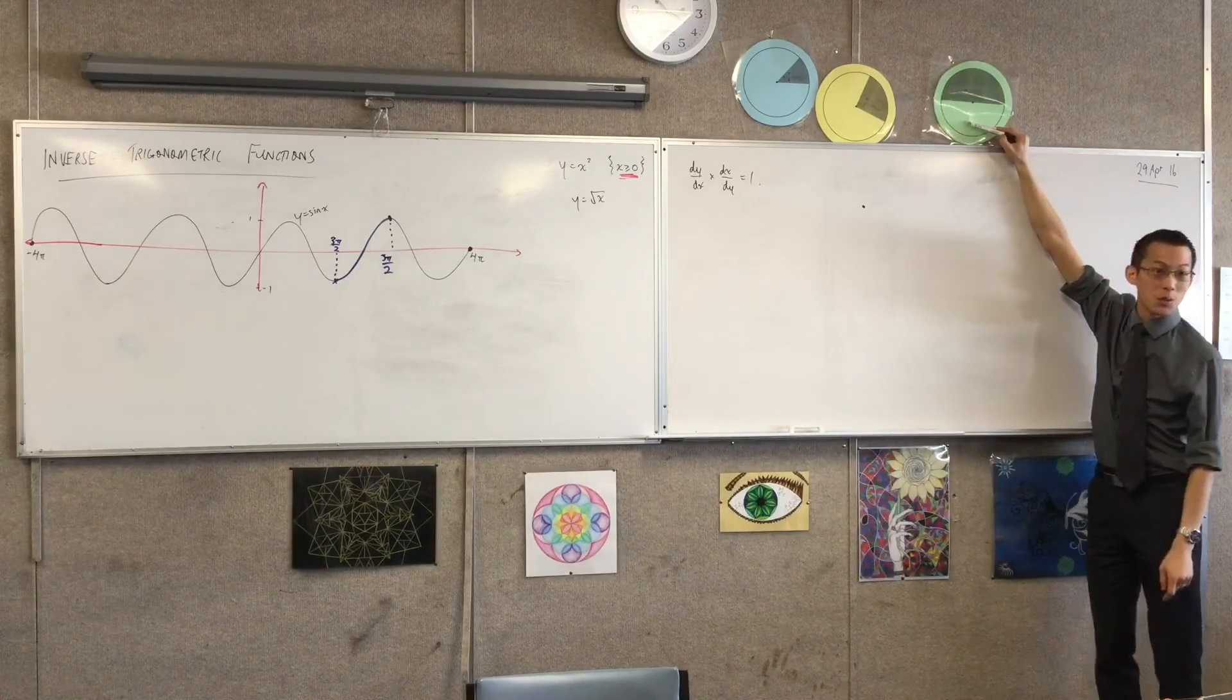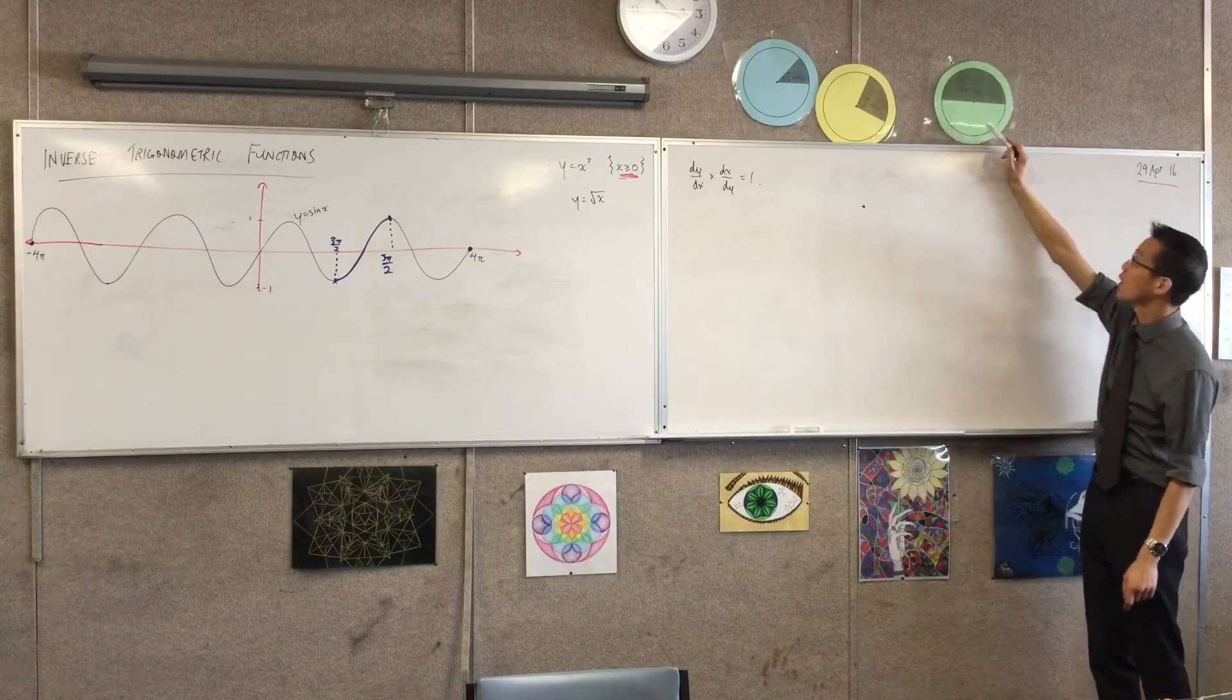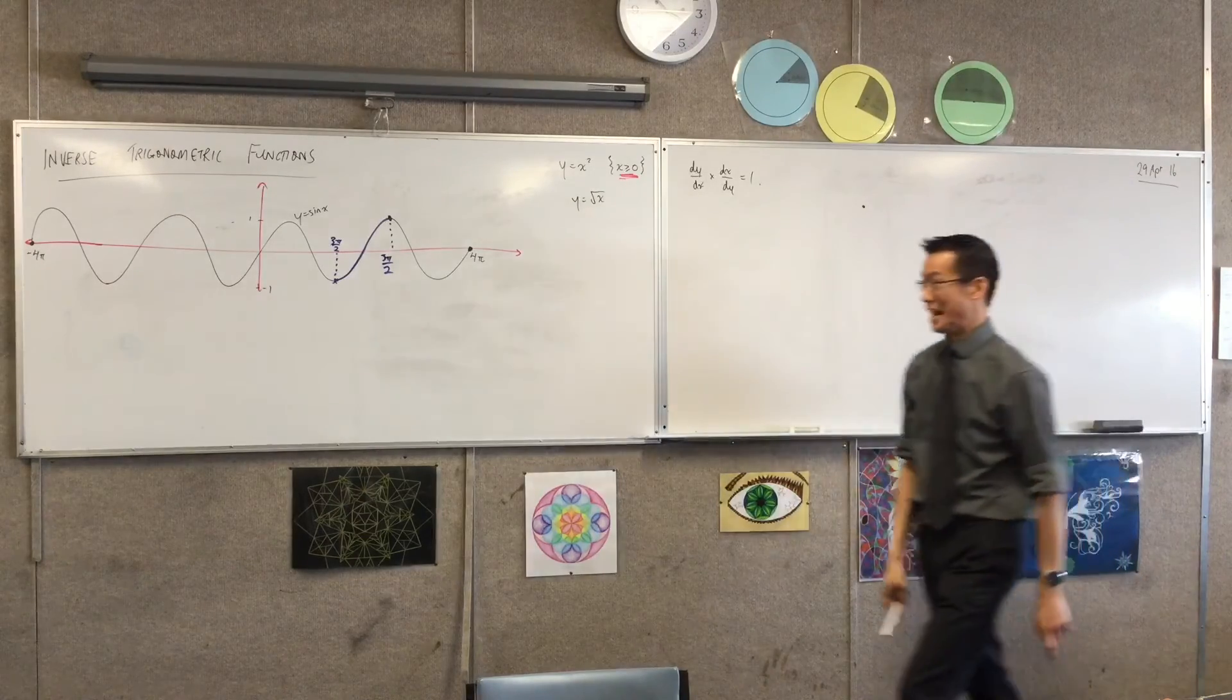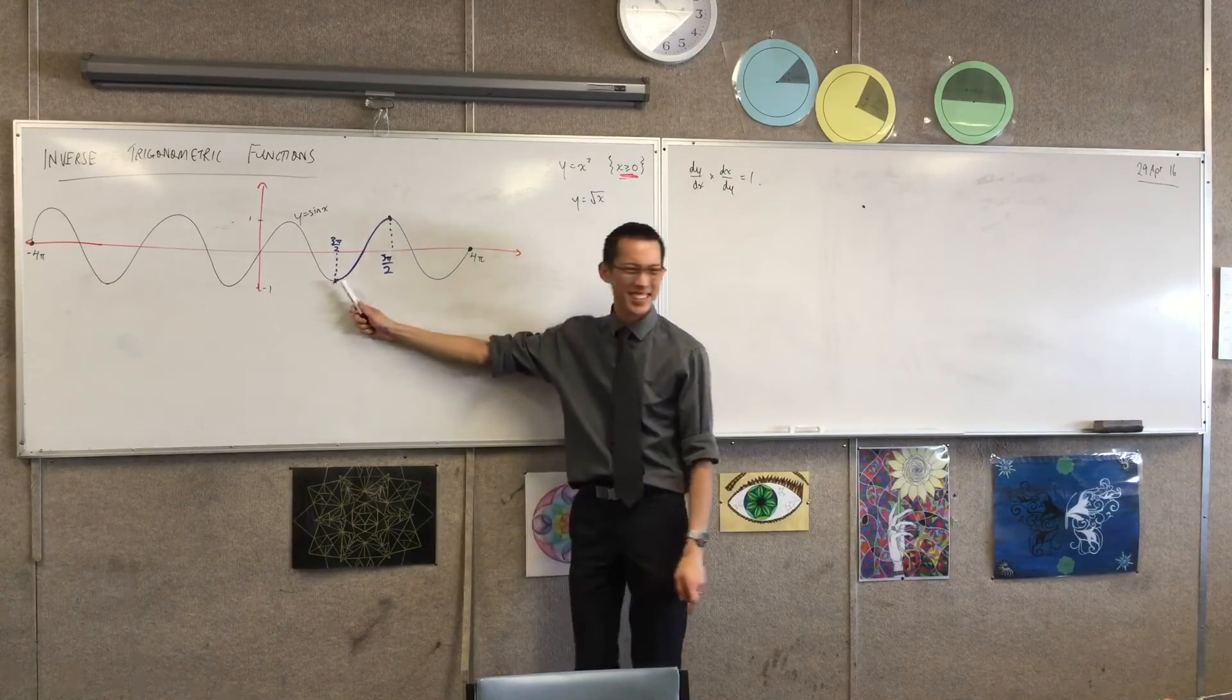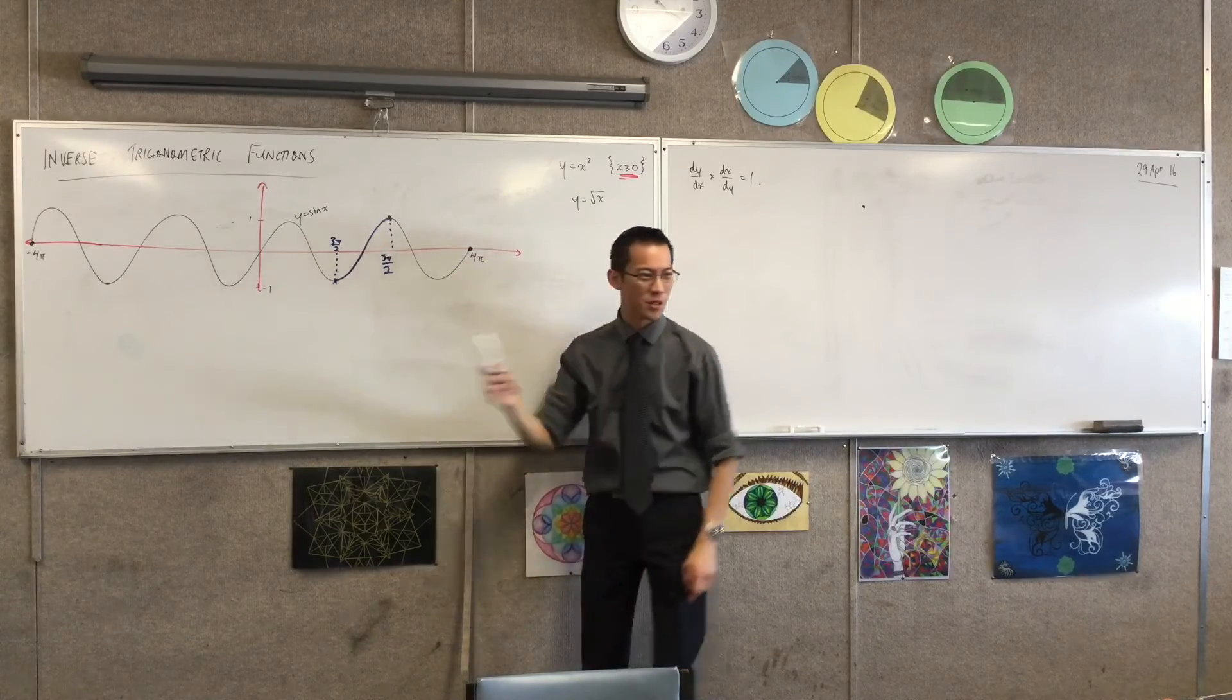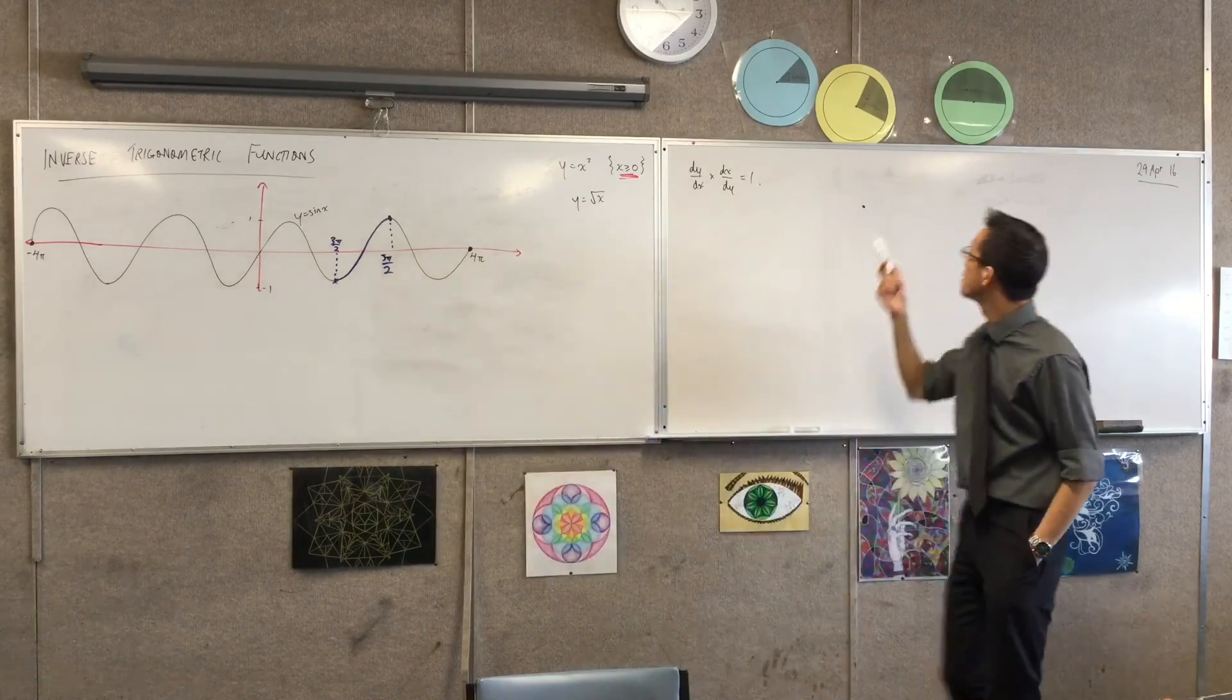So you have three quarters of the way around the circle. That's a reflex angle isn't it? And that's the smallest angle in your domain and then it just gets worse. And then you get to five π on two.